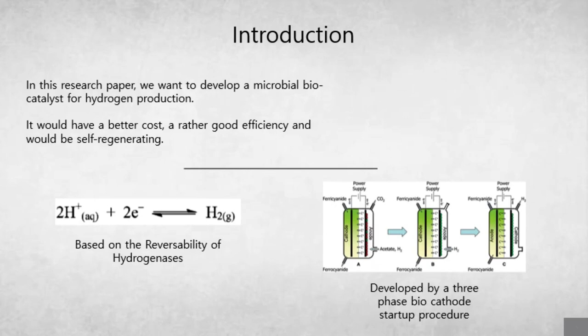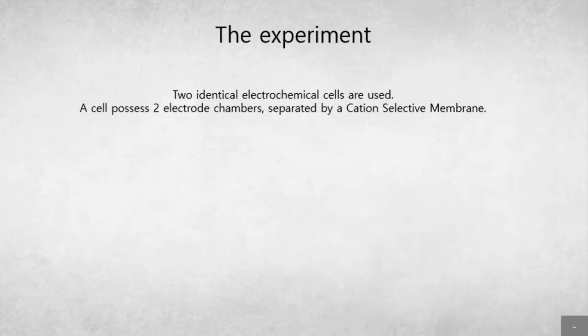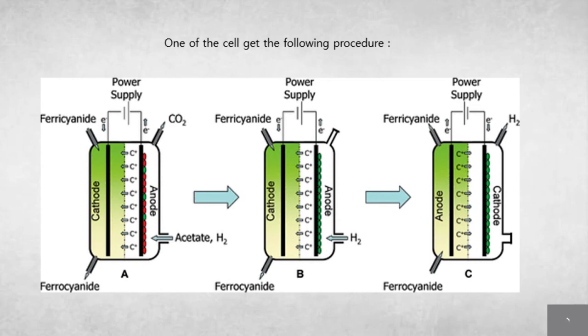To produce this biocathode, it's going to be developed by a three-phase startup procedure that you can see at the bottom right of the slide. I will detail it right after. During the experiment, two identical electrochemical cells are used. One cell possesses two electrode chambers separated by a cation-selective membrane. Now I'm going to detail this three-phase procedure. First of all, we want to put some biofilm on an anode. This biofilm is already coming from an already functioning MFC. The biofilm is a mixture of a lot of different microbes, and we nourish it with acetate and H2.